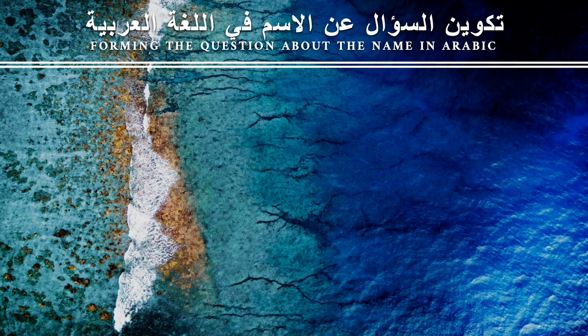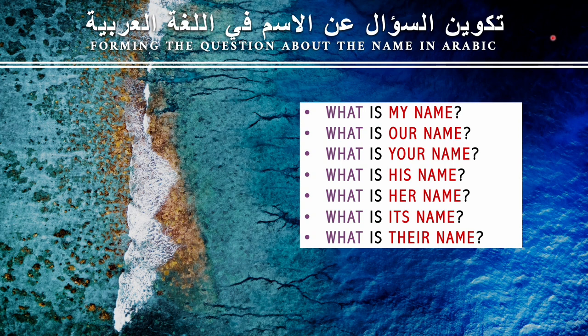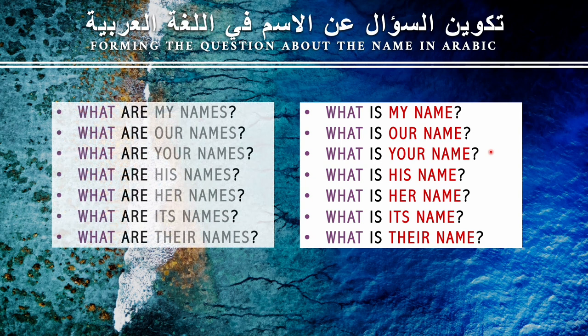I believe it's good to start this lesson with studying the logic of forming a question in Arabic. If I would like to ask about the name in English, we can form the questions: What is my name? What is our name? What is your name? Etc. — if it's singular. Or: What are my names? What are our names? What are your names? Etc. — if it's plural.